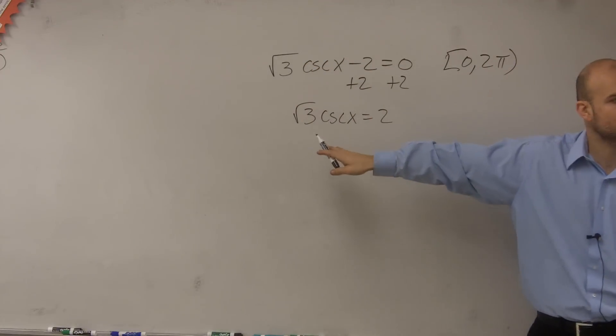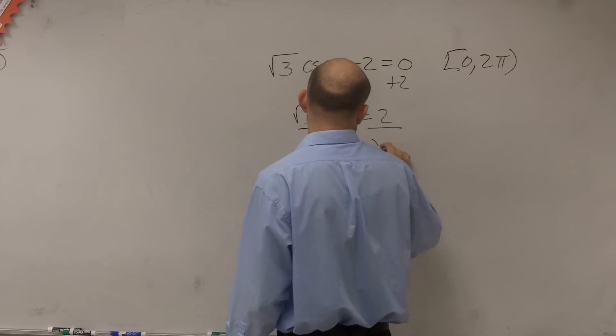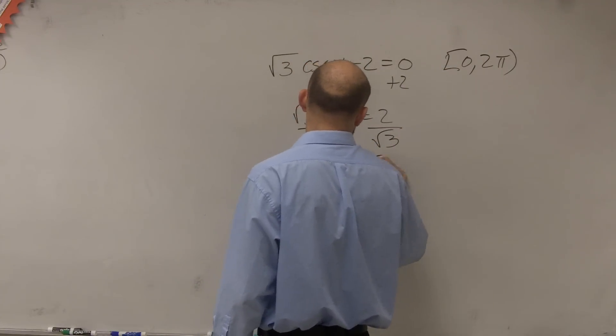Then I have to undo, multiply by the square root of 3. I'm going to divide by the square root of 3. And I get cosine of x equals 2 over radical 3.